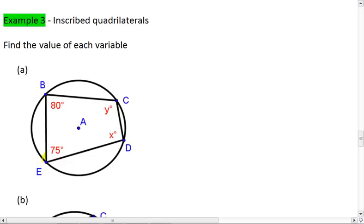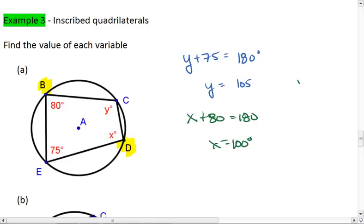Alright, in this first one, I see that E is opposite C, meaning that Y plus 75 equals 180. So Y equals 105. Now I see that B and D are opposite each other. So X plus 80 equals 180. X equals 100. Thus, I find that X equals 100 degrees and Y equals 105 degrees. Those are my answers.